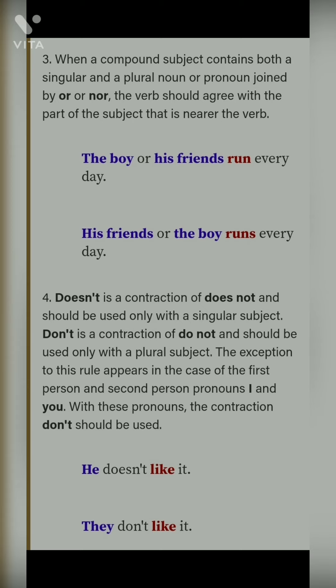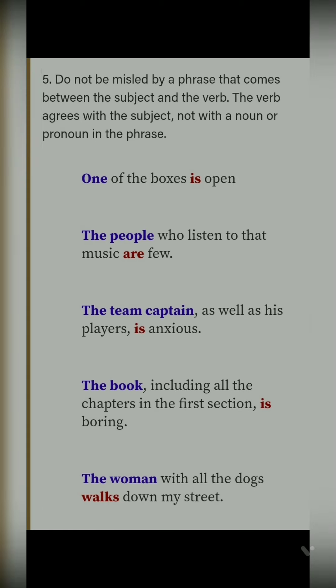Fifth point: do not be misled by a phrase that comes between the subject and the verb. The verb agrees with the subject, not with the noun or pronoun in the phrase. Humein bus subject dekhna hai aur ussi ke saath verb lagana hai. For example: 'one' hai to 'is' aayega; 'the people' plural hain to 'are' aayega; 'the team captain' singular hai to 'is' aayega; 'the book' singular hai to 'is' aayega; 'the woman walks' — verb singular subject ke saath singular hogi.